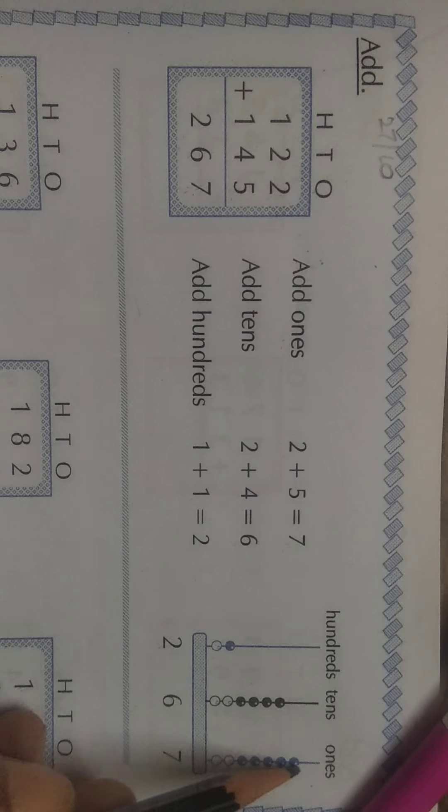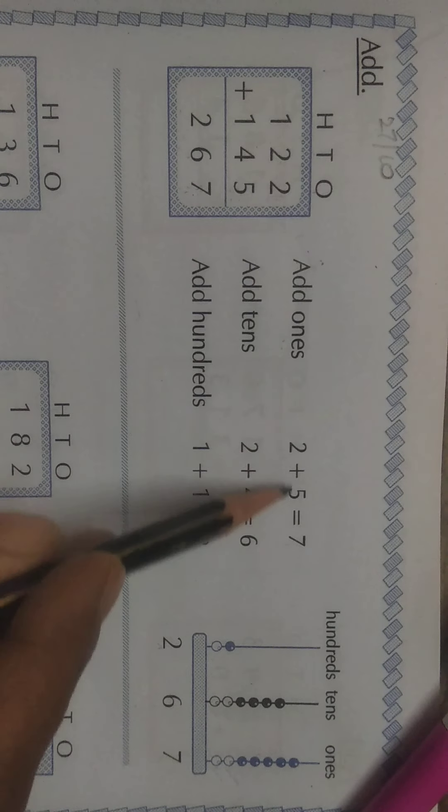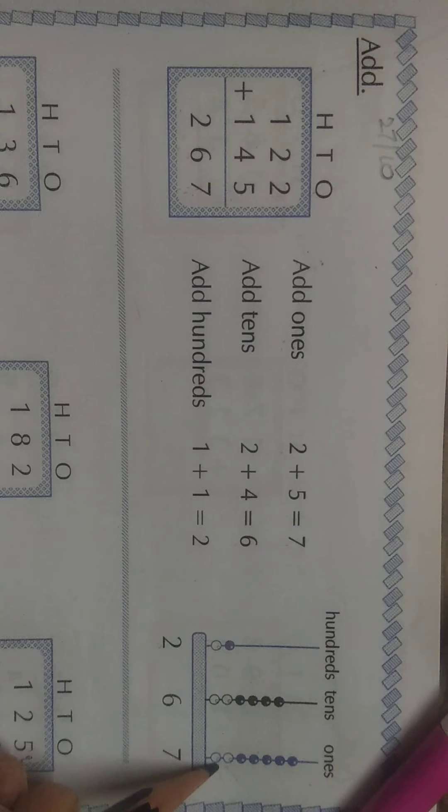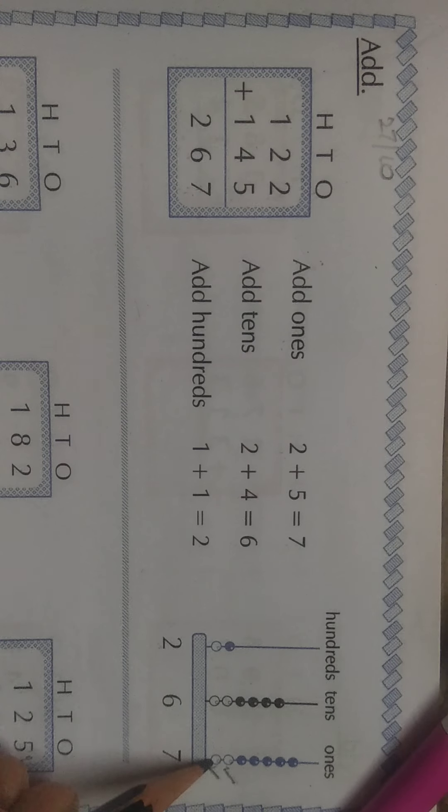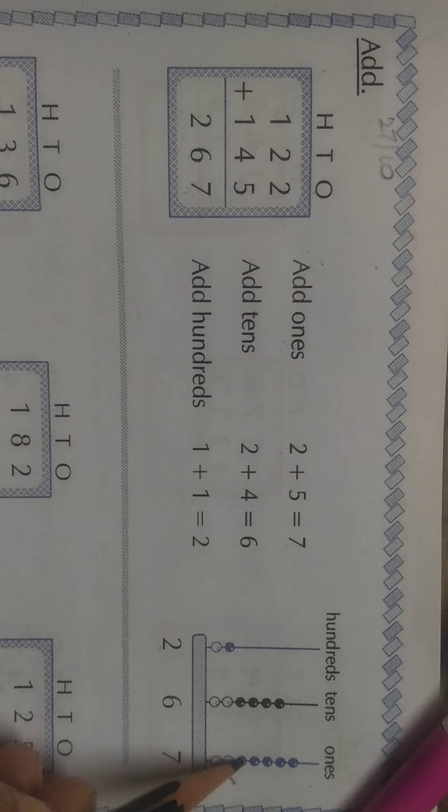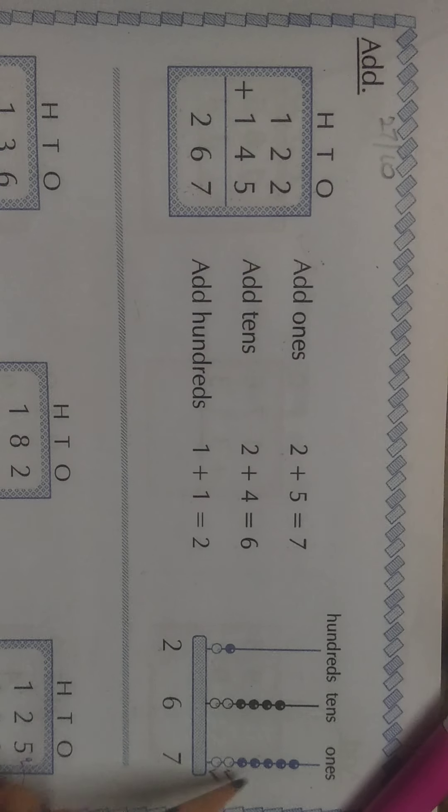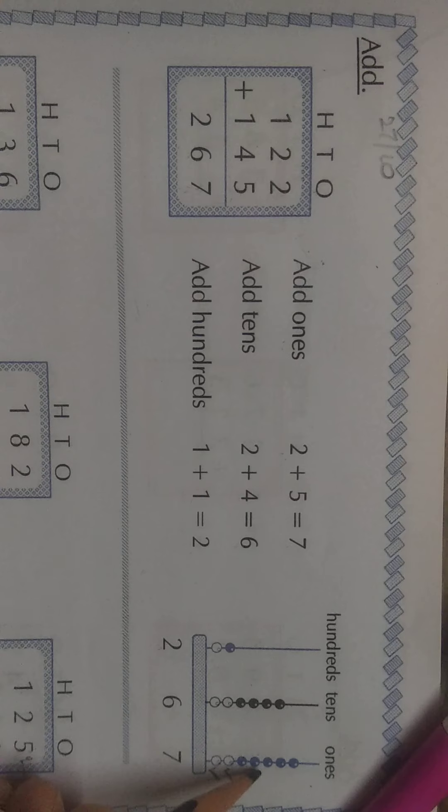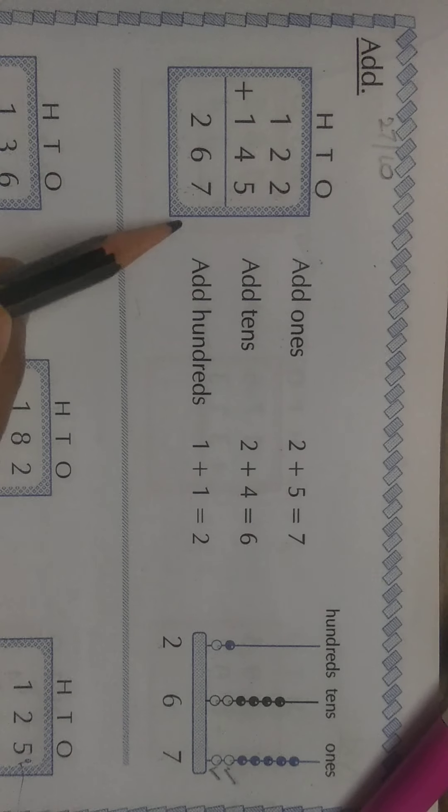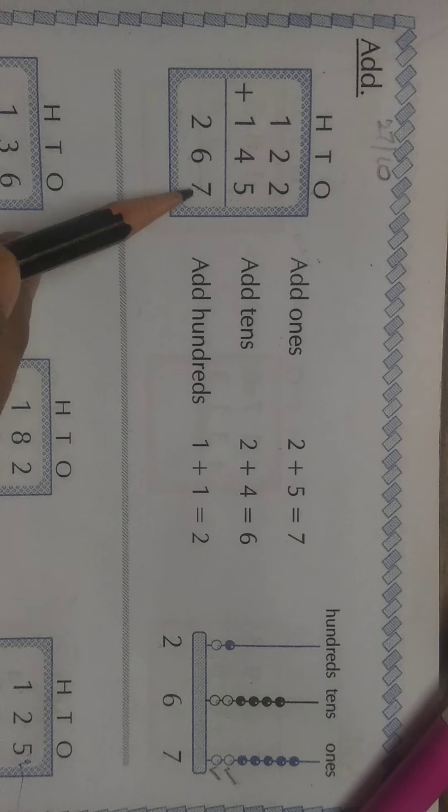Same thing shown on the abacus. 2 plus 5. For 2, here, two white beads are drawn. For 5, 1, 2, 3, 4, 5, five blue beads are drawn. So, total how many beads are there? 1, 2, 3, 4, 5, 6, 7. The answer is 7. In the ones place, the answer is 7.